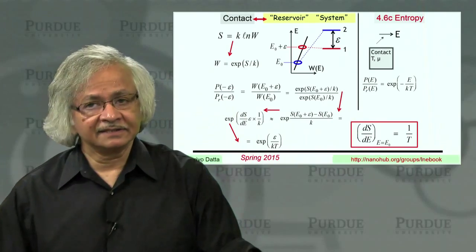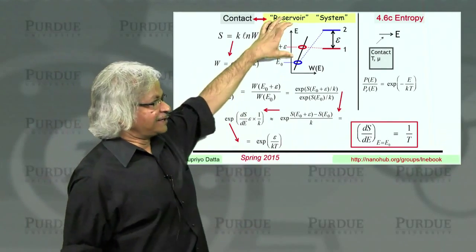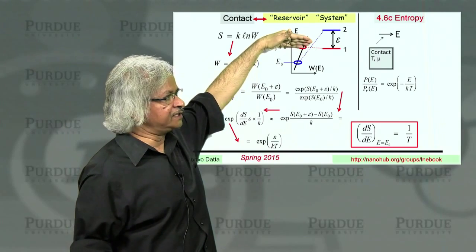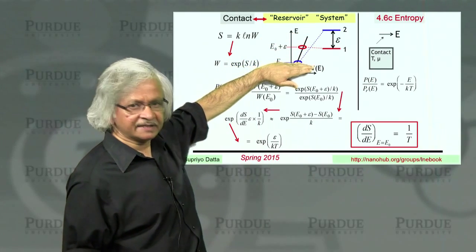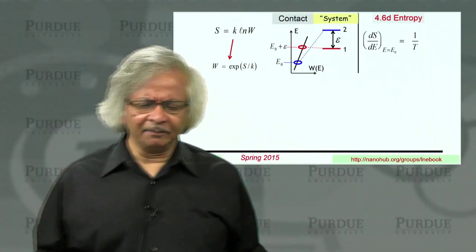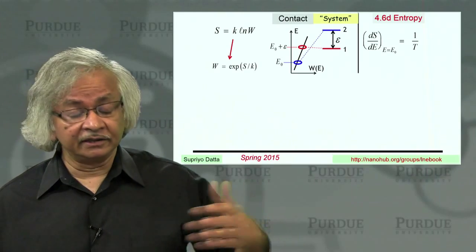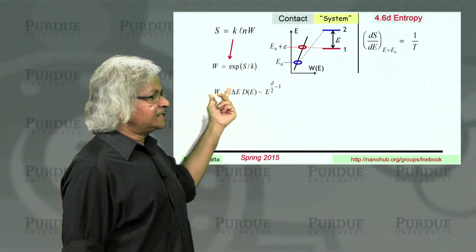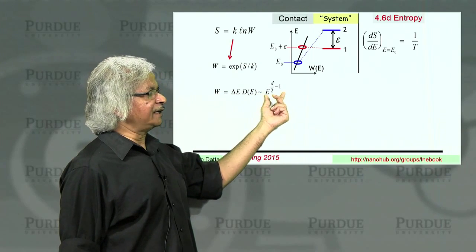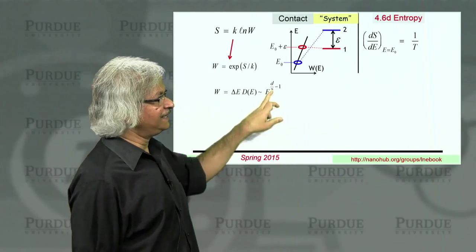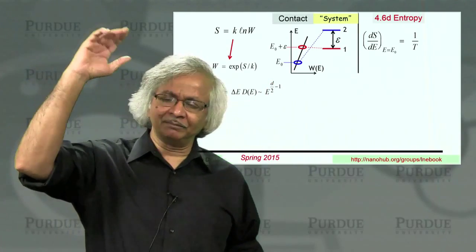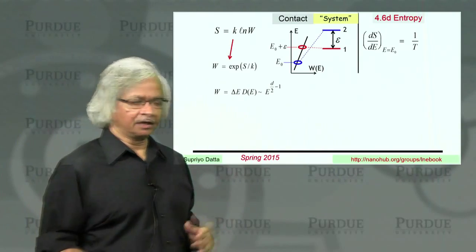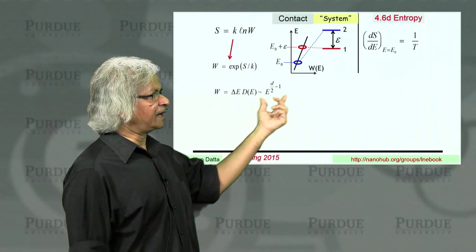Note then that this is entirely a result of the reservoir or the contact having a lot higher density of states with an increase in energy than for less energy. Now you might say, well, if you remember back in unit 1, we had looked at the density of states of different types of conductors, different electronic states. And if you remember, the density of states was actually proportional to energy to the power d over 2 minus 1, where d is the number of dimensions. This was something we did back in unit 1.